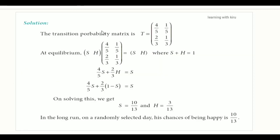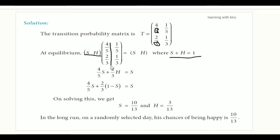Looking at the denominator: here it is 5, so balance is 1 by 5; here it is 3, so 3 equals 1. At equilibrium there are two equations. S is sad, H is happy. The matrix is equal to sad and happy, and sad plus happy equals 1. Probability equals 1, so the sum equals 1. We write the first element: yes (S) equals 4 by 5 and H equals 2 by 3. The sum of H equals 1 minus S.